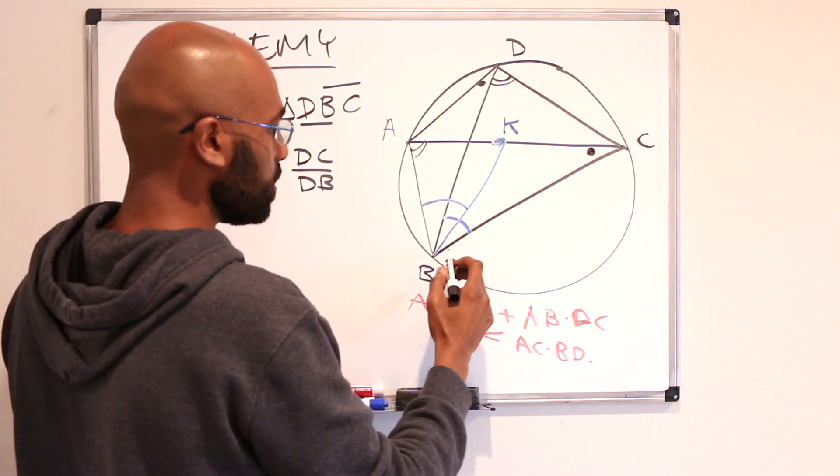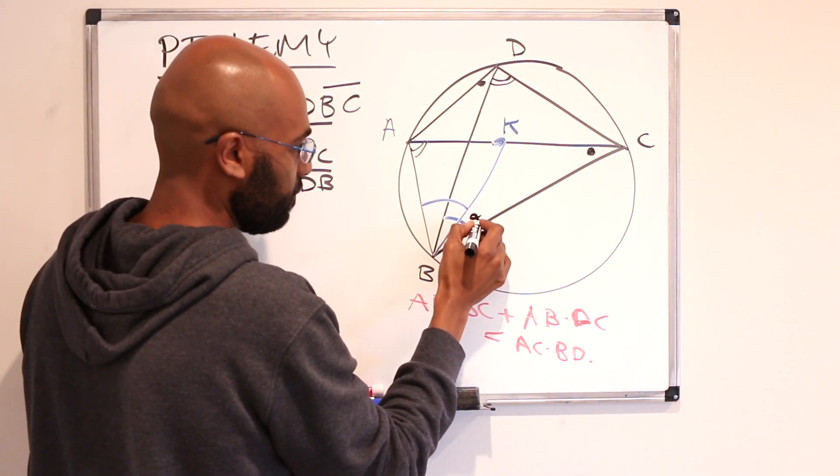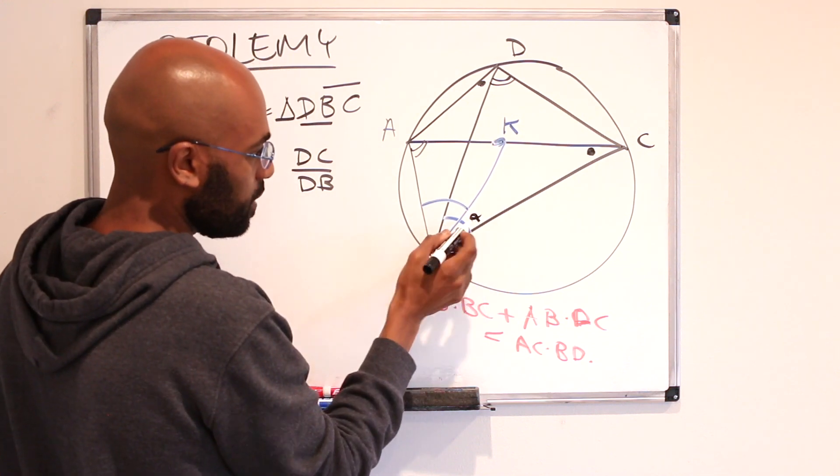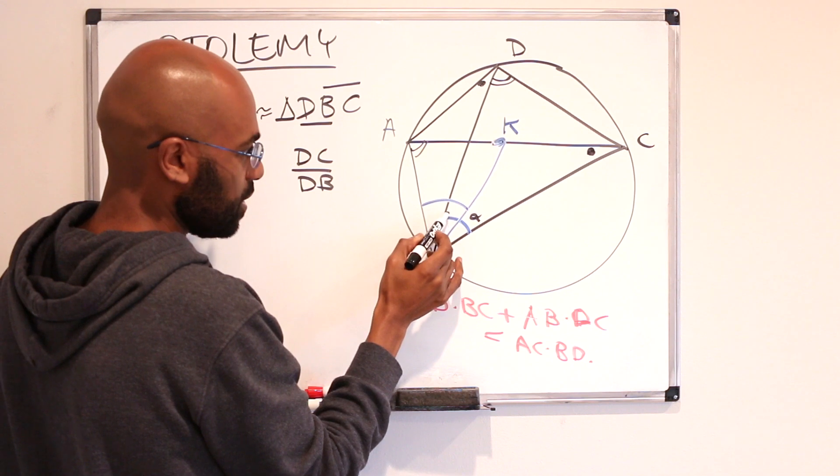At the same time if you look at this triangle CBK right over here we have this angle alpha and this angle alpha is this blue angle minus this angle right over here.